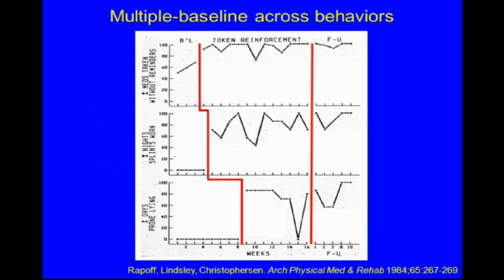This is an example of a multiple baseline across behaviors from a study with a young lady who had arthritis. She was required to take her medicines without reminders, wear splints on her wrist at night to prevent contractures, and do a prone lying exercise to prevent hip contractures. We have baseline in all three conditions, then introduced a token reinforcement program only for medications — that increased substantially while splint wearing and prone lying were untreated. We then introduced the token system for splint wearing, then for prone lying, and both also increased. These were maintained at follow-up.